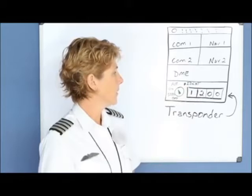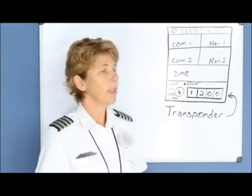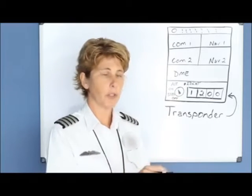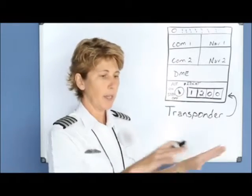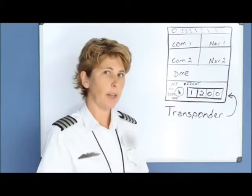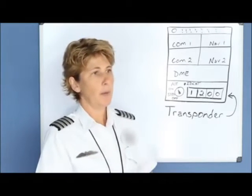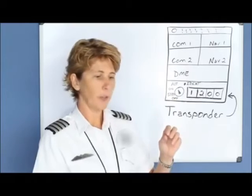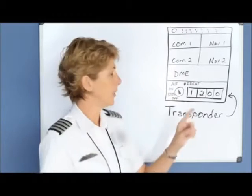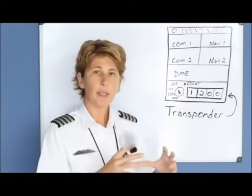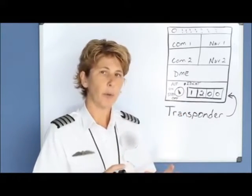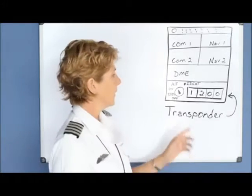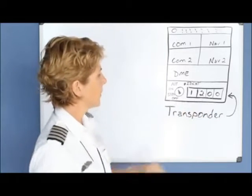The ident button is used when the controllers need to distinguish your position in relation to other aircraft — they're trying to find you. Maybe there are 20 aircraft on their radar scope and they tell you to ident; you push that button and it basically glows on their radar screen so they can find you quicker.